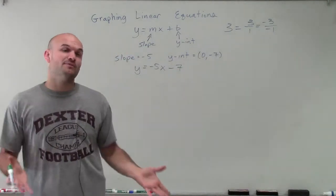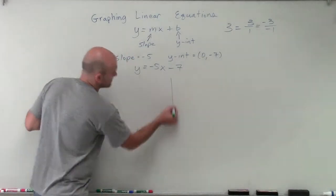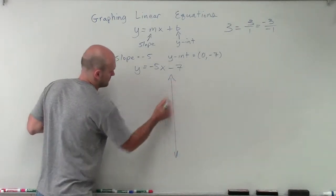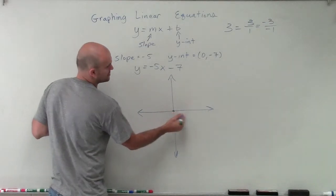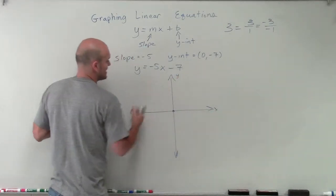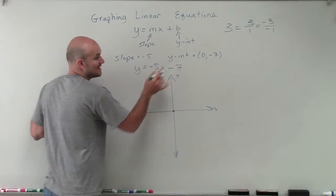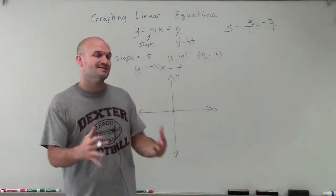All right. So now we need to graph this. And remember, the first thing we need to do when graphing this is to make sure that we start at our y-intercept. So here's my x-axis. Here's my y-axis. So my y-intercept is negative 7. Remember, that's where the graph crosses the y-axis.